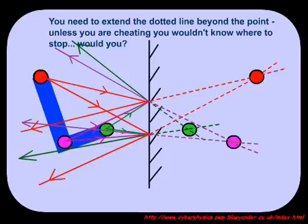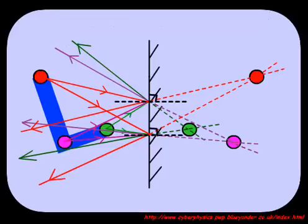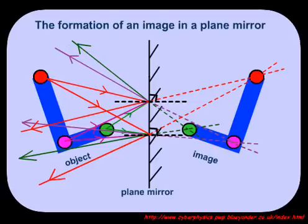Using colour for each of the points makes the image easier to understand when it is finished. Don't forget your normals. You can now label the diagram and join up the image points to make the final image.